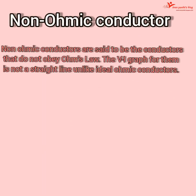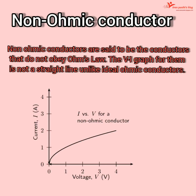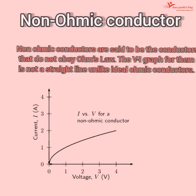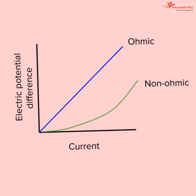A conductor which does not exactly satisfy Ohm's law — that is, whose V-I relationship is not linear — is called a non-ohmic conductor or non-linear resistance. Example: semiconductors and insulators. The graph of ohmic and non-ohmic conductors is shown.